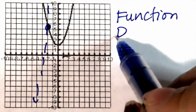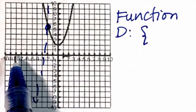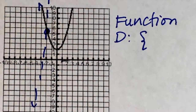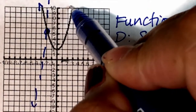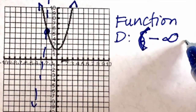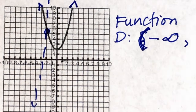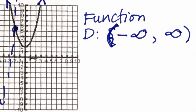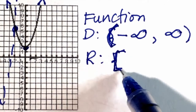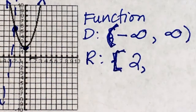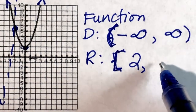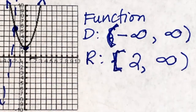How about the domain? The domain will be all values of x. As you can see, the graph extends continuously to the left and to the right. Therefore, the domain is negative infinity to positive infinity. How about the range? The range starts at positive 2. Since the graph goes upward, the range is from positive 2 to positive infinity.